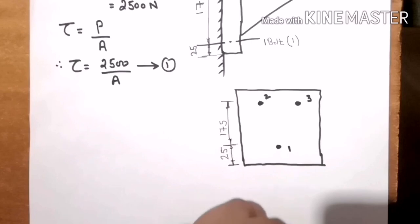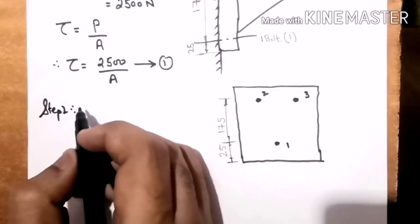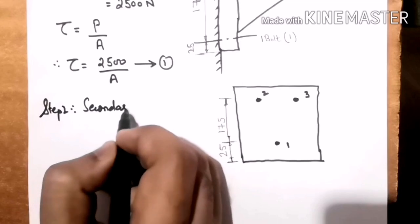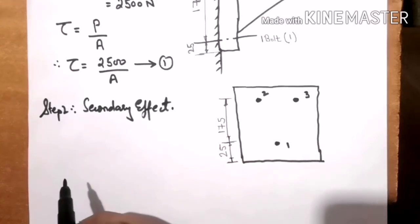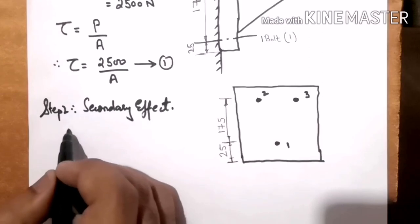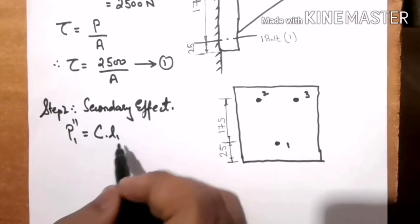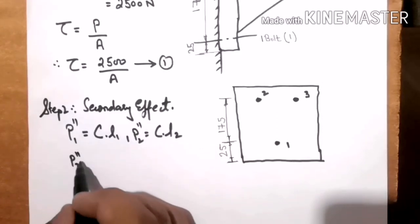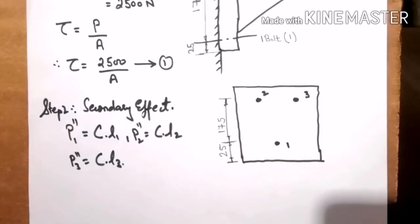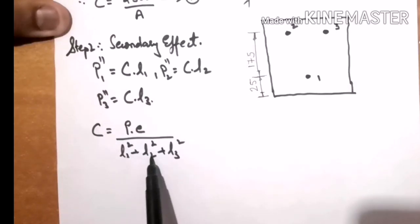Step 2: Secondary Effect. From previous lectures we know that P1'' = C × L1, P2'' = C × L2, and P3'' = C × L3. The aim is to find C, L1, L2, and L3. For C, we write: C = (P × E) / (L1² + L2² + L3²).